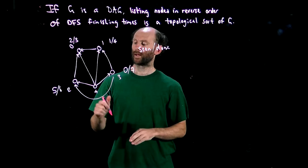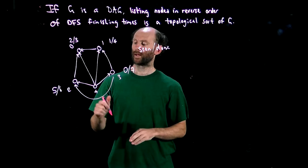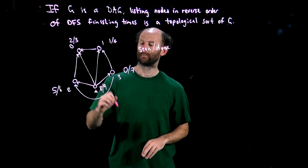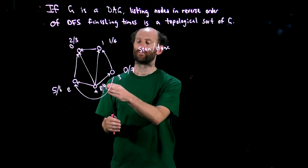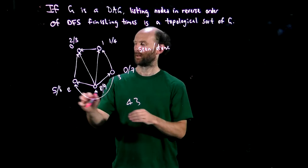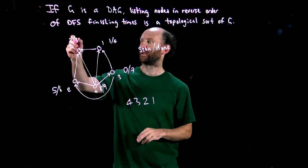We haven't visited four yet so we'll visit four at time eight and we'll be done with it at time nine. So now if we simply list the nodes in the reverse order of the done times, we start with four, then three, then two, then one, and then zero, and that you can check is a topological order for this graph here.